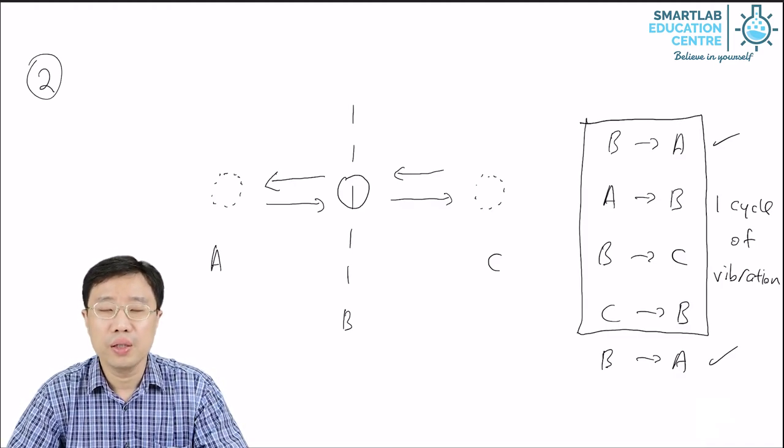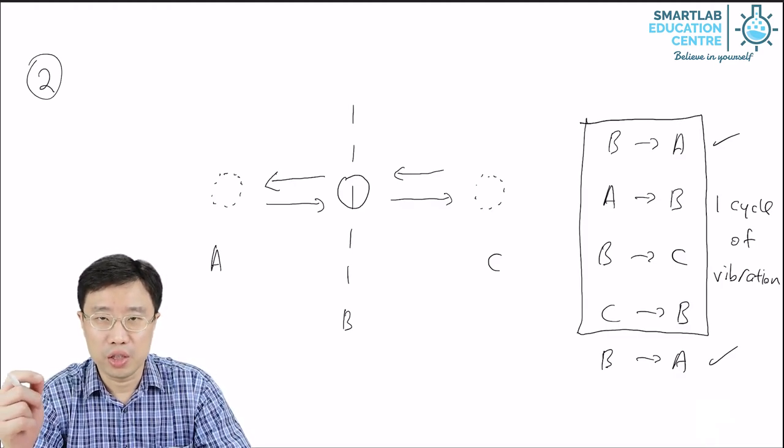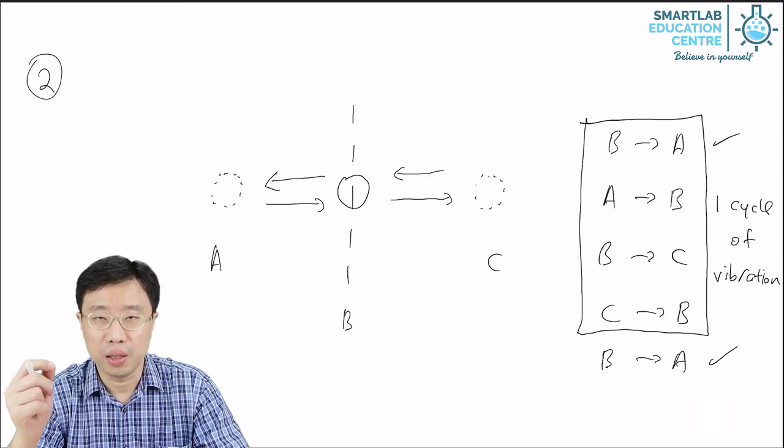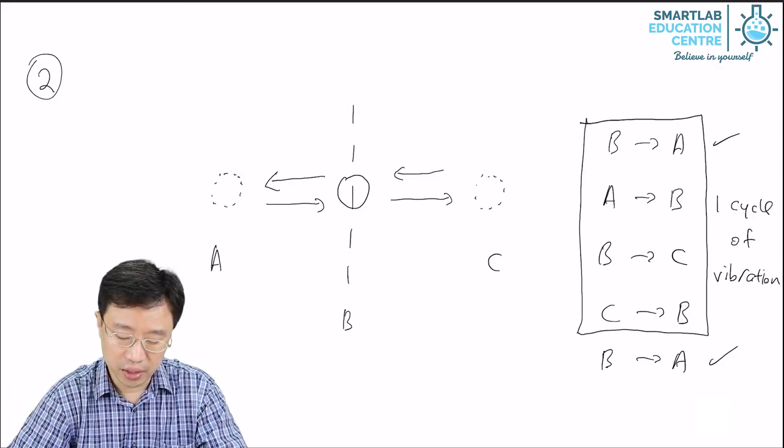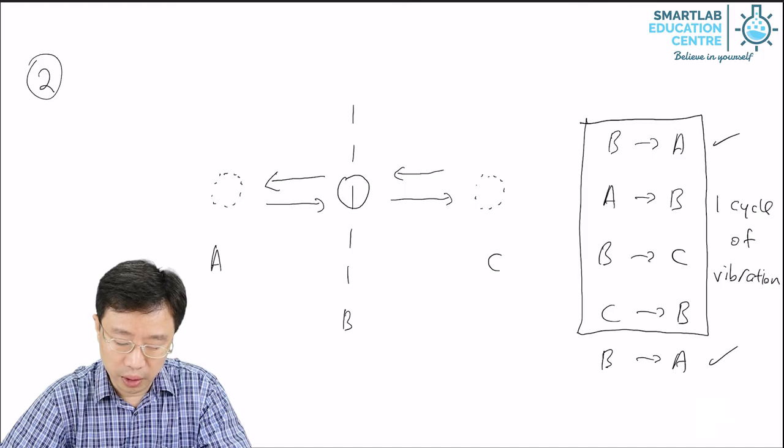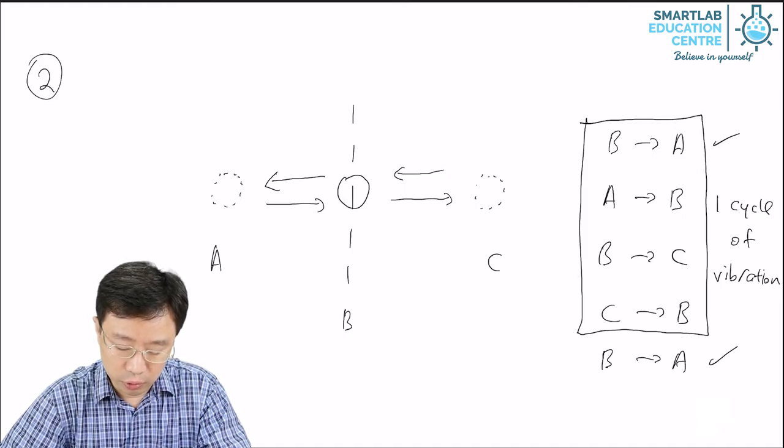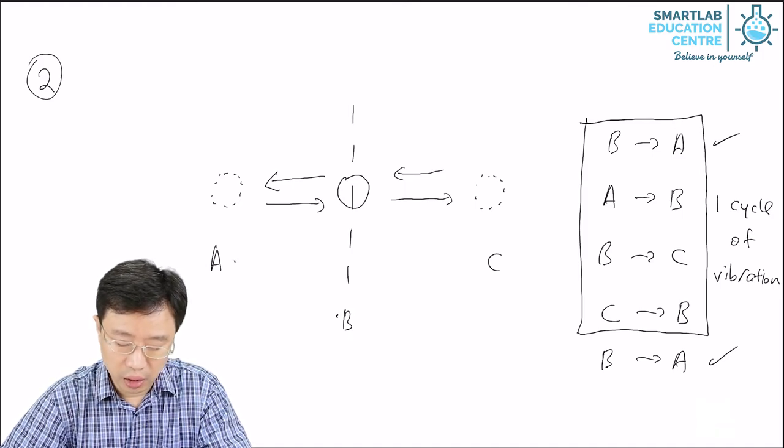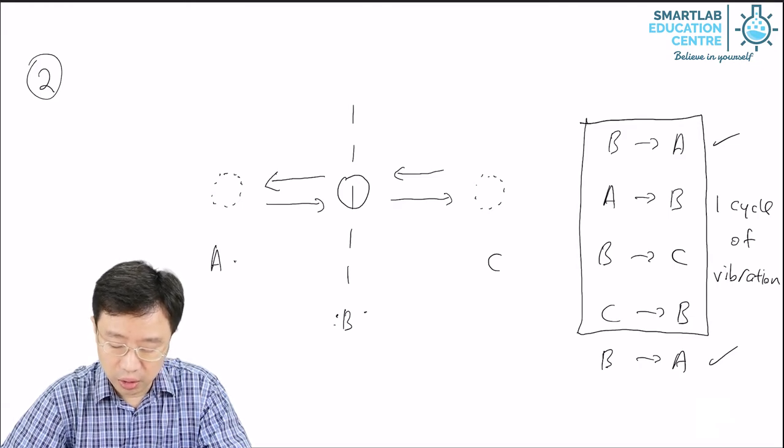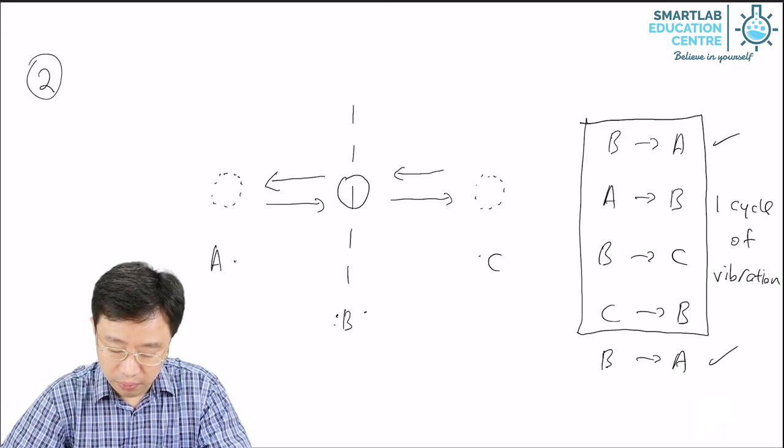Vibration means the particle is moving about the position. In this case the particle is moving about position B. It moves from B to A, back to B, B to C and back to B.